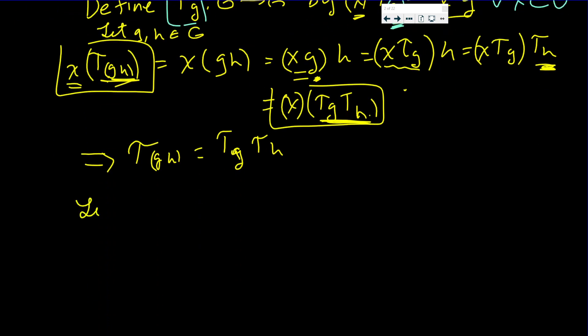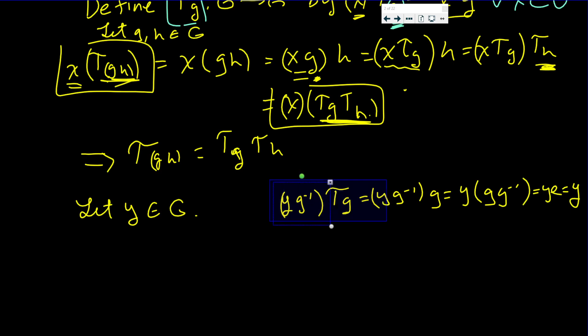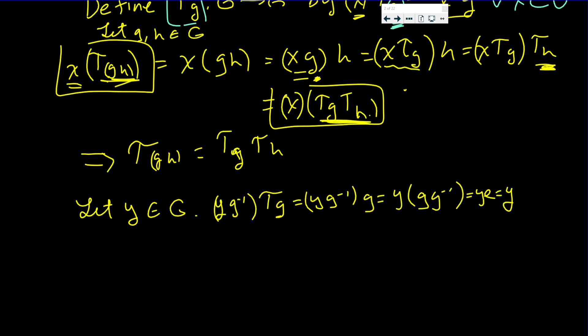Now is this function onto? Let y be in G. Now y is equal to, let's just show it, let's not claim it. That being acted on by τ_g. That's yg⁻¹ times g which is y times gg⁻¹ which is ye which is y. So what we can conclude by this is that τ_g is onto. This implies that τ_g is onto.